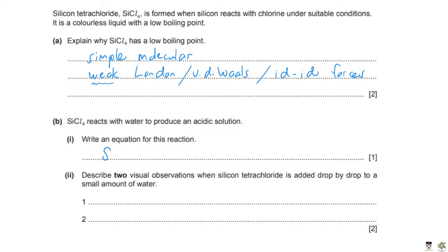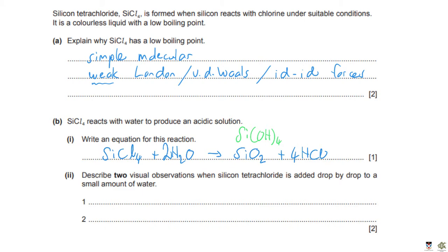Writing the equation for SiCl₄ reacting with water: SiCl₄ + 2H₂O → SiO₂ + 4HCl. Remember to balance with a 4 in front of HCl and a 2 in front of water. You may also encounter an alternative version using Si(OH)₄ — silicon hydroxide — as the insoluble product instead of SiO₂. Both are correct; the Si(OH)₄ version is just a different form of the same reaction equation.